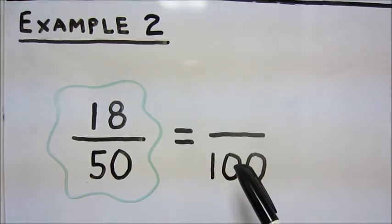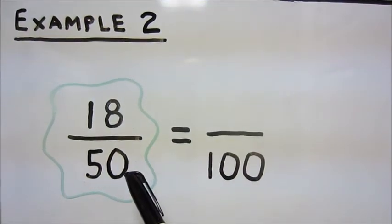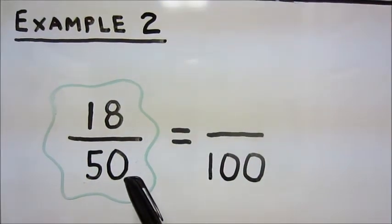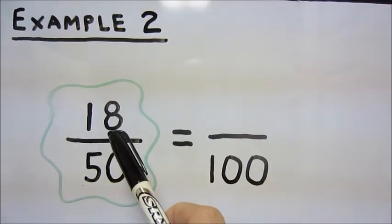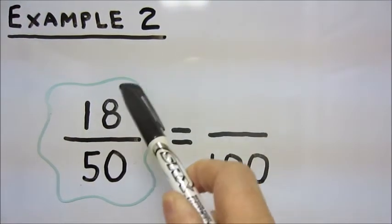all we're going to do is take 100, divide it by 50 to get 2, take that 2, multiply it by 18 to get 36, and we have our new numerator of 36.